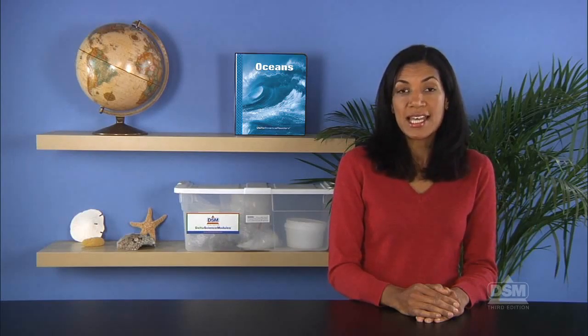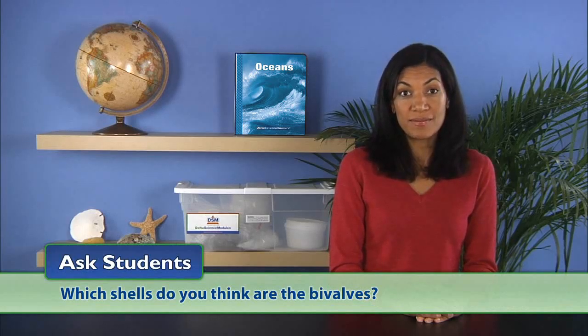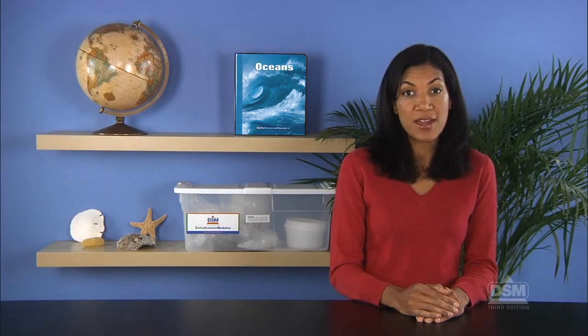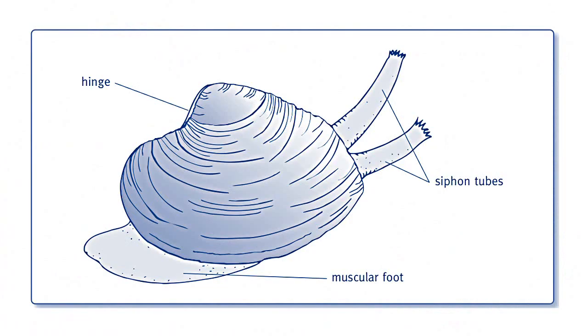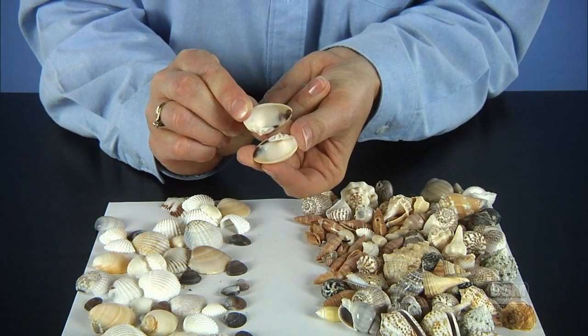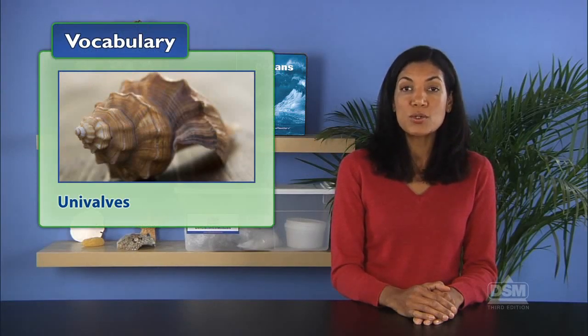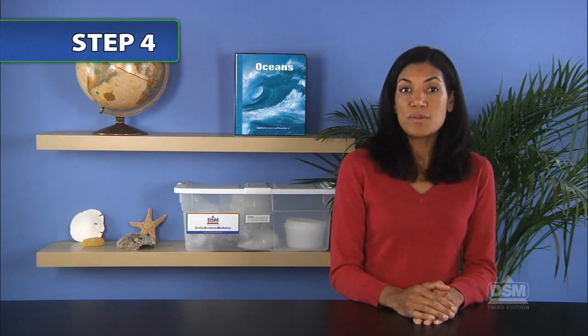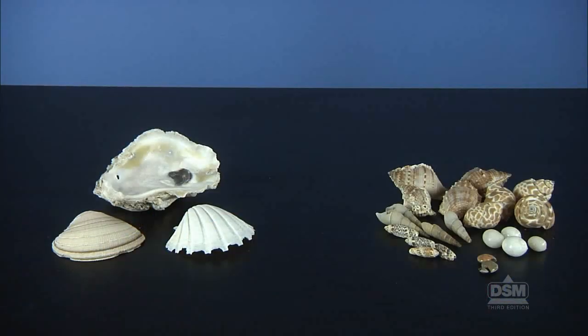Next, ask students to sort through their shells and separate the flatter shells from the spiral or cone-shaped shells. Inform students that the prefix bi means two and ask which shells they think are the bivalves. Students may recognize that the flatter shells occur in pairs. Help the class understand that bivalves are mollusks with two shells and that the two hinged shells fit together and can be opened and closed by the animal that lives between them. Then tell students to pick out two similar-sized bivalve shells and fit them together. Introduce the term univalves as soft-bodied mollusks whose shells form a spiral or cone shape. Note that the prefix uni means one and that univalves have just one shell.